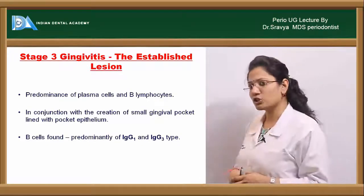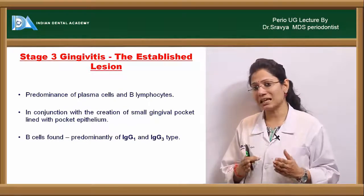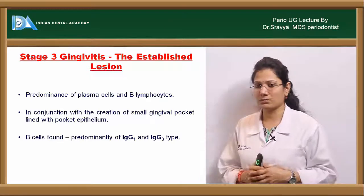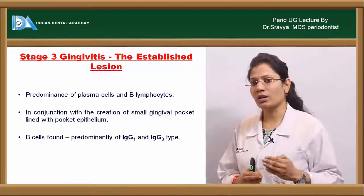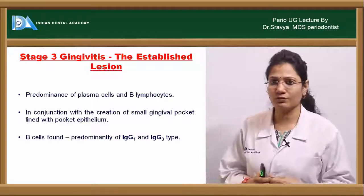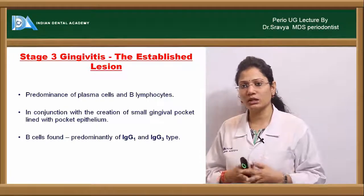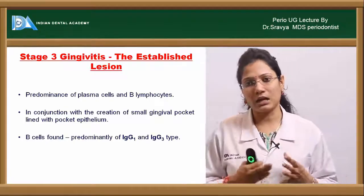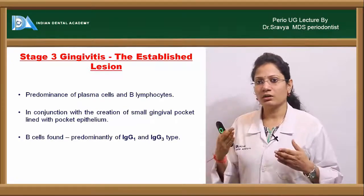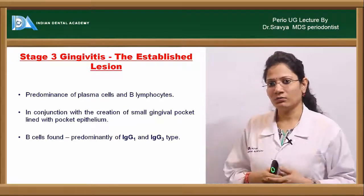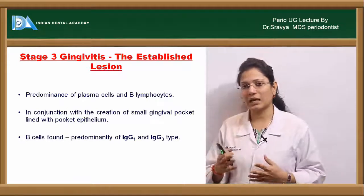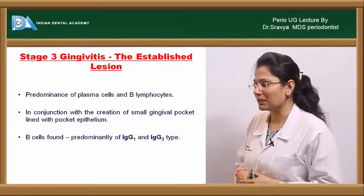In the established lesion, the predominant cell type seen is B lymphocytes and plasma cells. To summarize: in Stage 1 (initial lesion), the predominant cells are neutrophils; in Stage 2 (early lesion), the predominant cells are T lymphocytes; whereas in Stage 3 (established lesion), the predominant cell types are plasma cells and B lymphocytes.